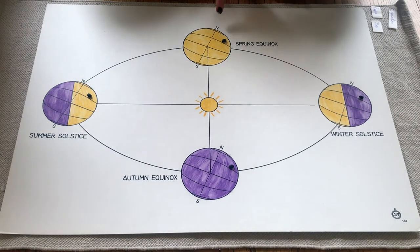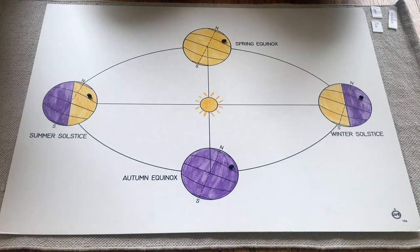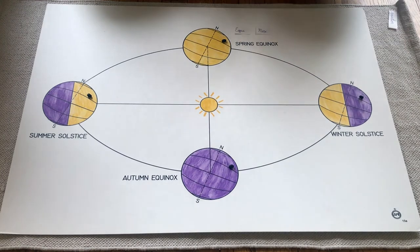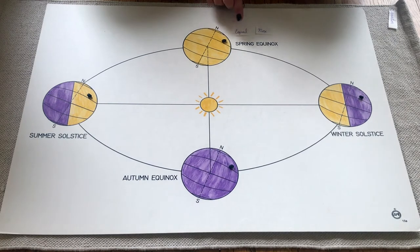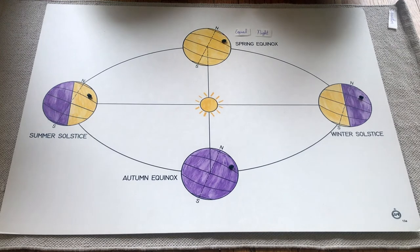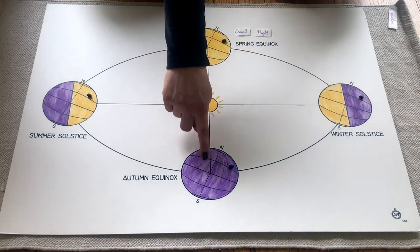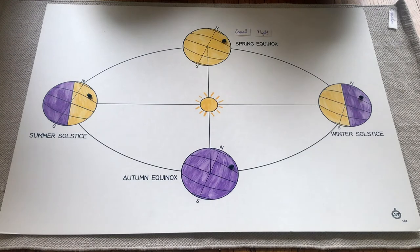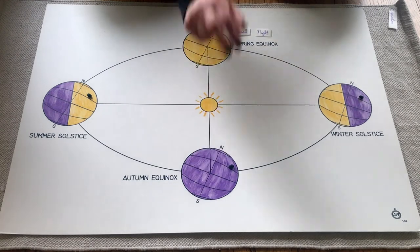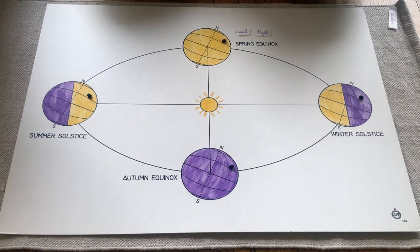As the Earth moves back up to here, we have what's called the spring equinox. That word equinox is a Latin word — equa means equal and nox means night. So equinox represents a time during the seasons when the day and night are equal to one another. Down here we have our autumn equinox, which is also a time when day and night are of equal length.